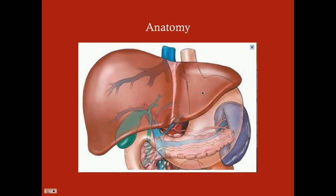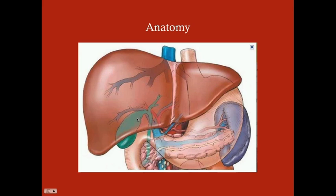Some rudimentary anatomy: we have the liver, the gallbladder which sits in the inferior aspect of the right lobe, the spleen, the pancreas which sits posterior to the stomach, and then the duodenum. Most people divide the liver via the falciform ligament, which traverses the liver, giving us the right lobe and the left lobe. Some divide it by which part gets circulation from the left or right hepatic artery.